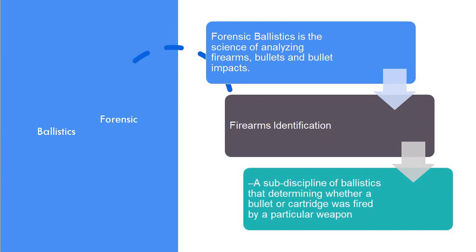Firearms identification can be considered a sub-discipline of ballistics where we want to determine whether a particular bullet or cartridge found at the crime scene was fired from a particular weapon or not. By identifying the particular weapon, we can identify the person who fired it or narrow down the list of suspected people.